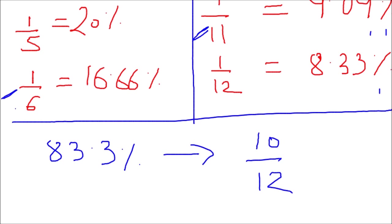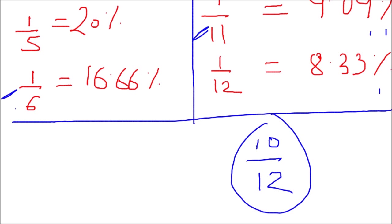There is one more use of these 12 fractions — you can also find the percentage from a ratio. For example, for the ratio 10/12: I know that 1/12 is equivalent to 8.33%, so for 10/12 it would be 10 × 8.33 = 83.3%. You get the converse just as easily.